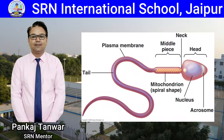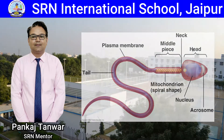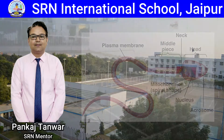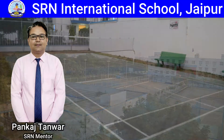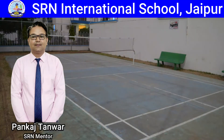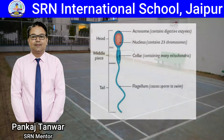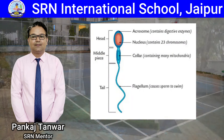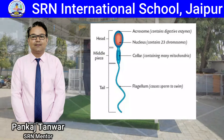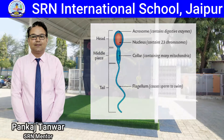Now I am discussing about the topic structure and function of a sperm. The structure of sperm consists of four parts: head, neck, middle piece, and tail. These are covered by a plasma membrane.